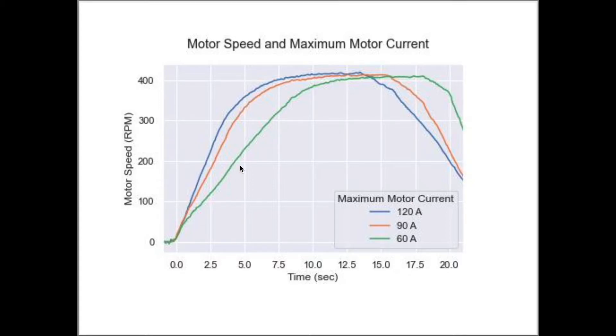We can also see that the blue line for 120 amps is steeper than the green 60 amp line. The slope of these lines is the acceleration, so we see an increasing initial acceleration with increasing maximum motor current limits.